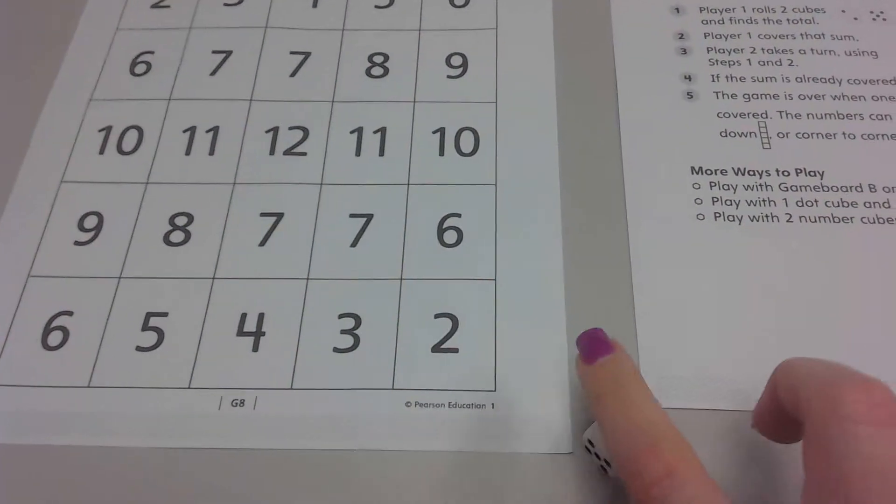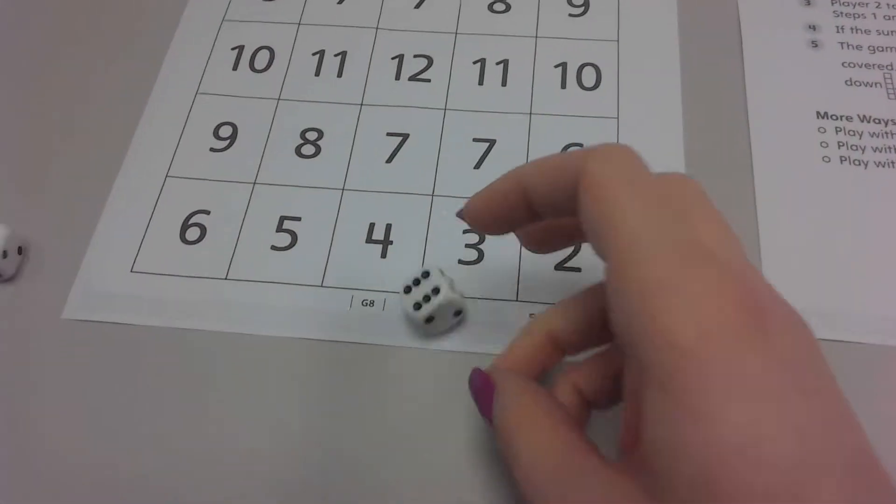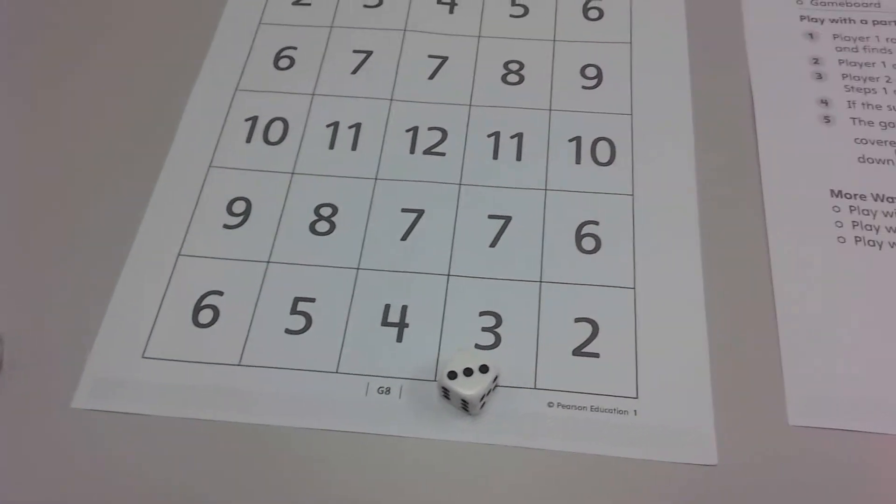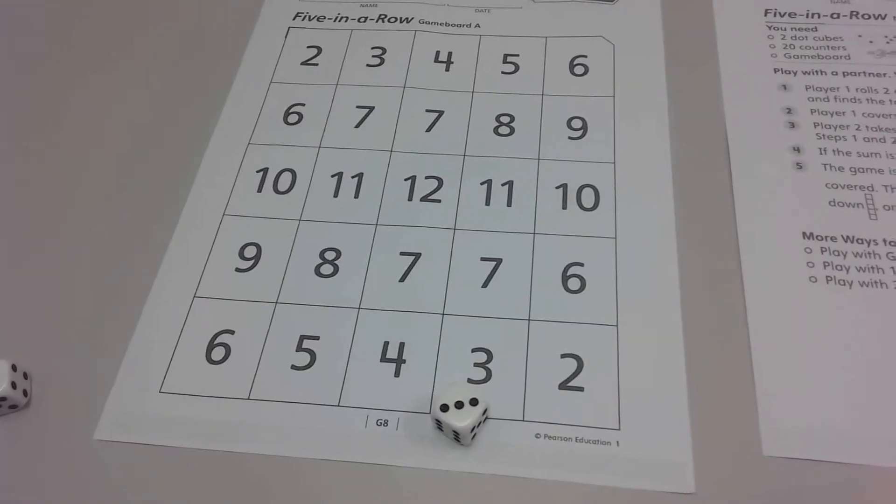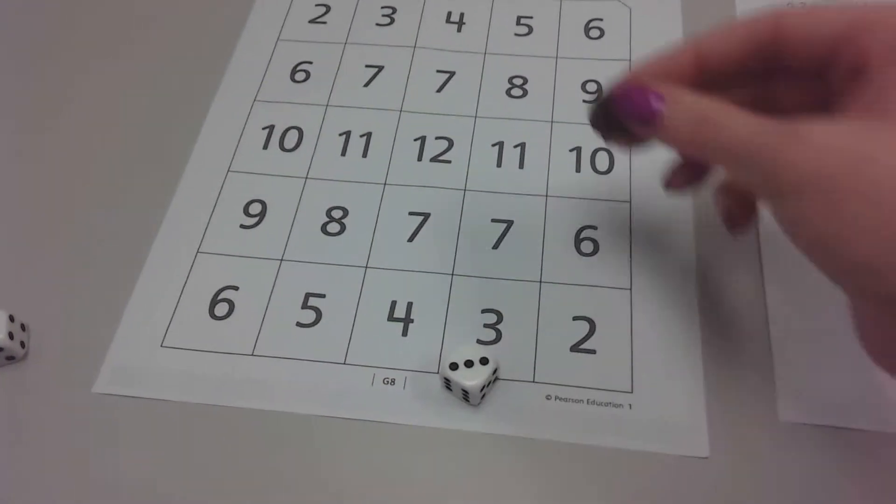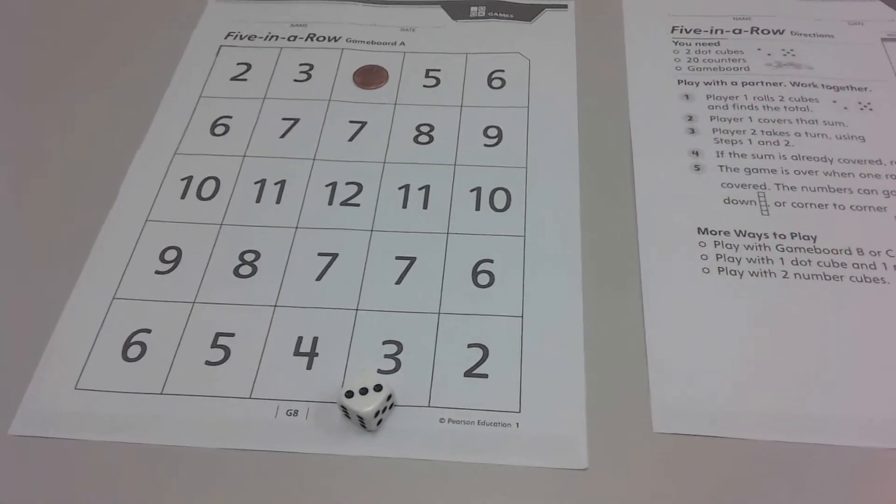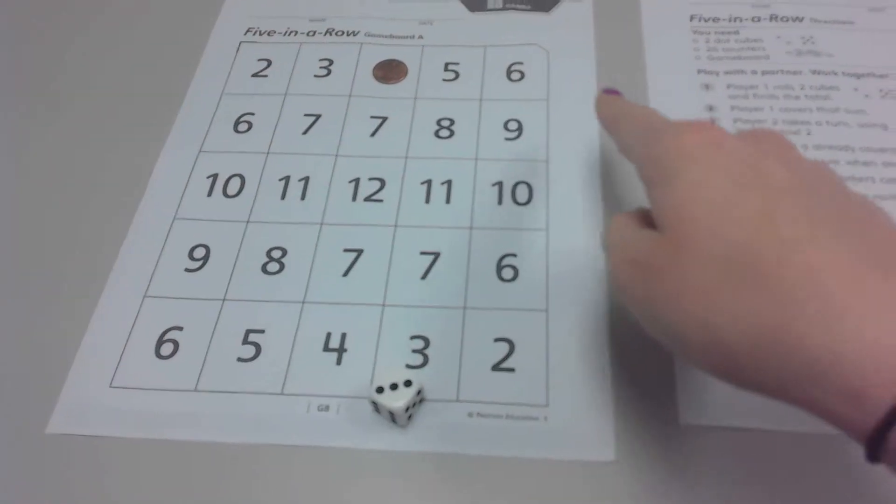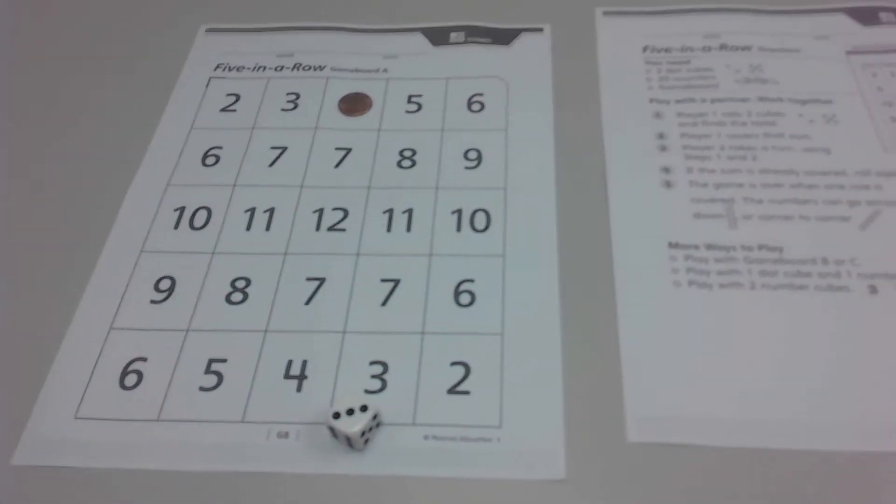Here's your game board. You're going to take the dice and roll, knowing that a one and a three makes four. Finding on the game board where you want to place your four. So I'm going to choose up here, knowing that your object is to make five in a row, whether it's going down, going across, or going diagonally. So I chose there.